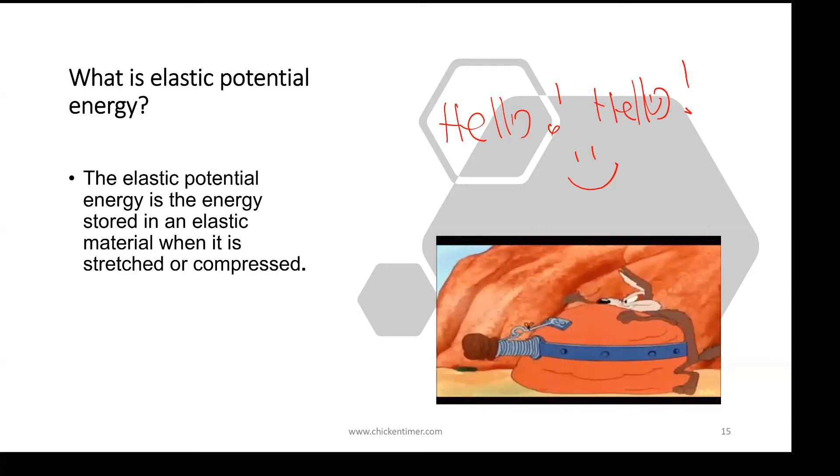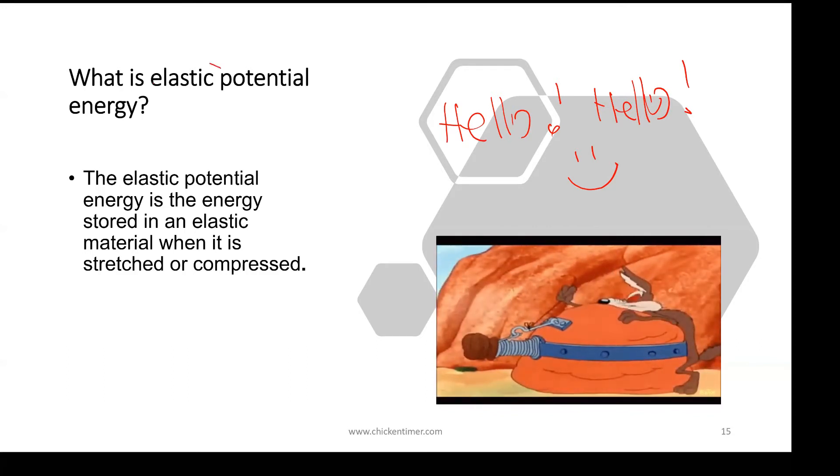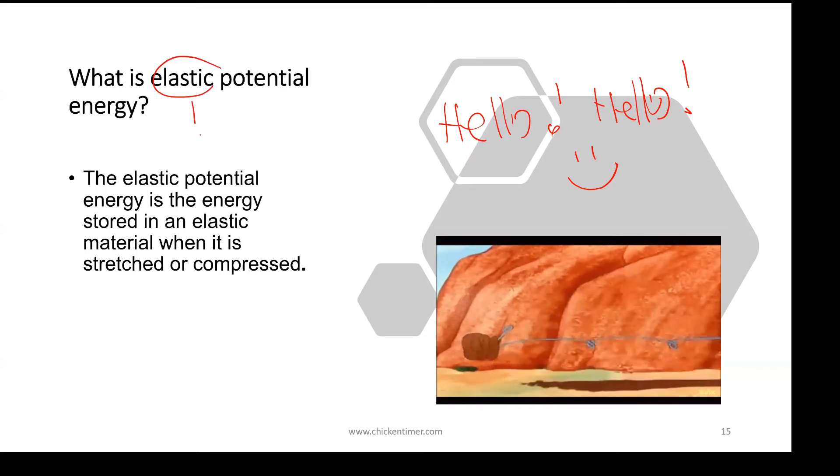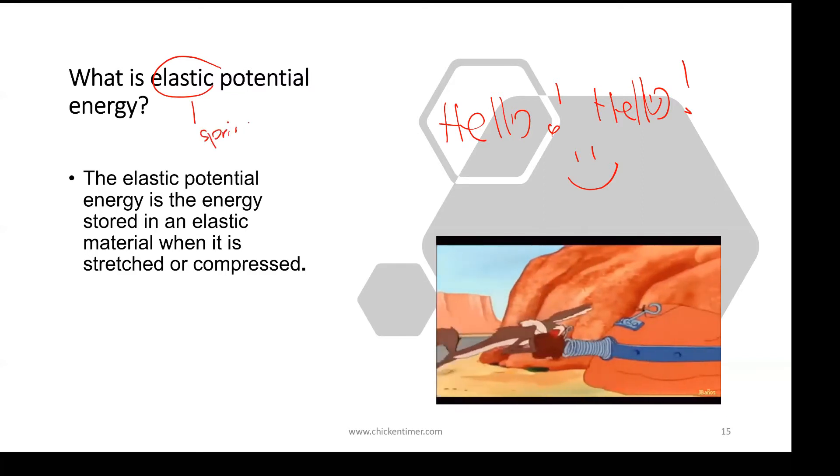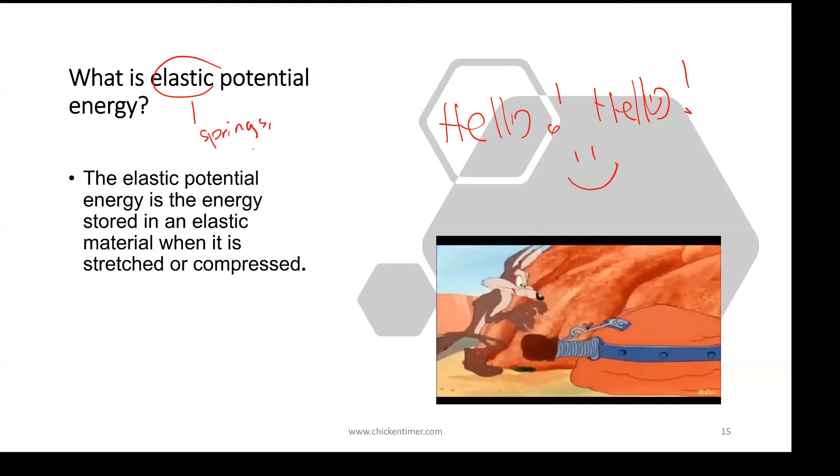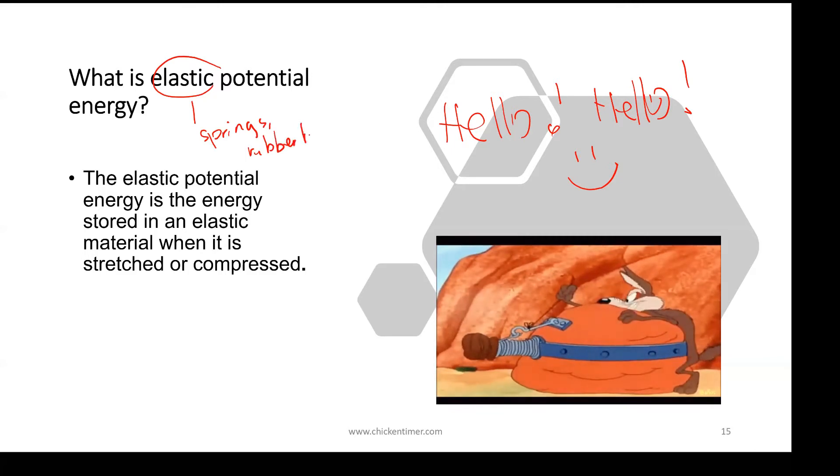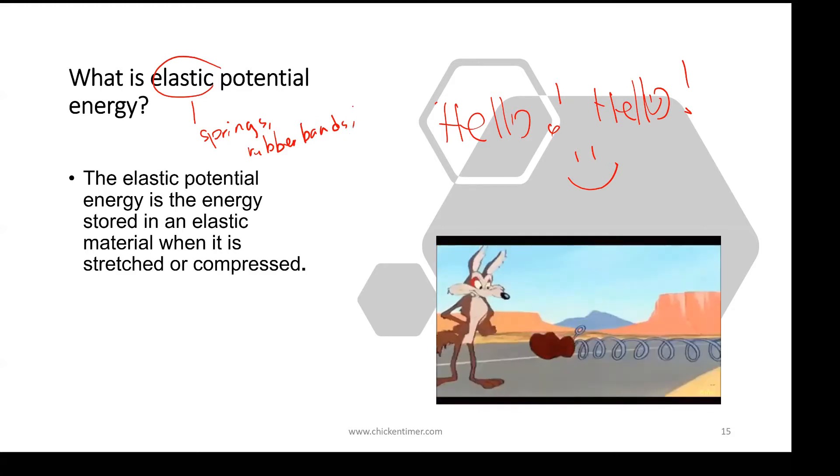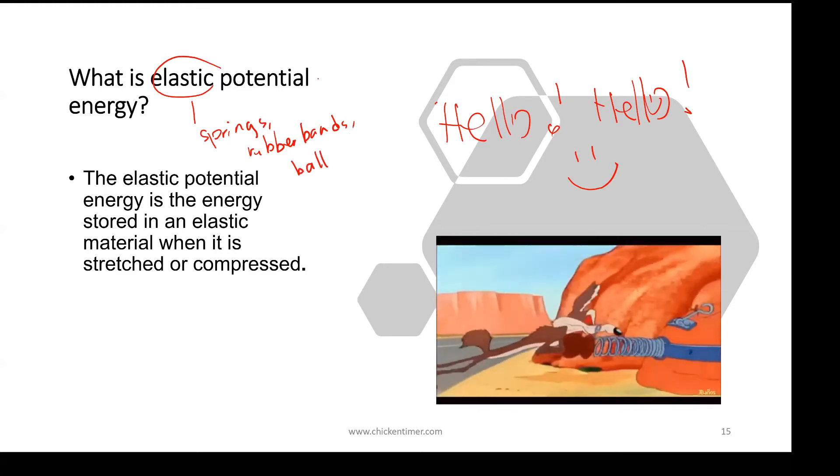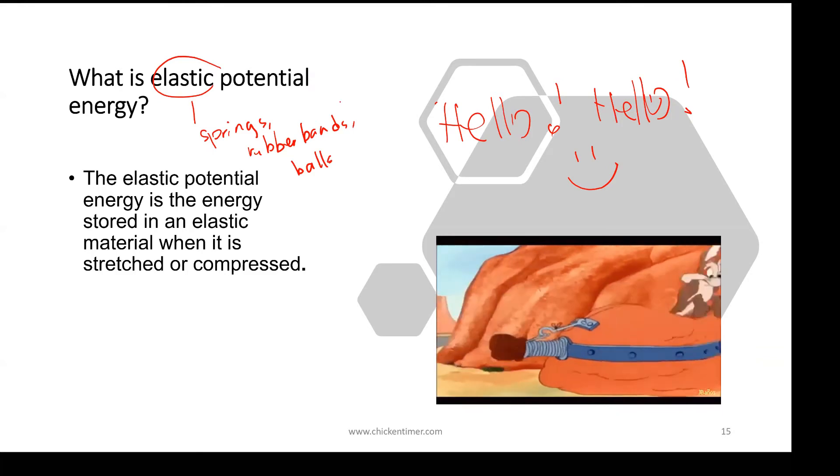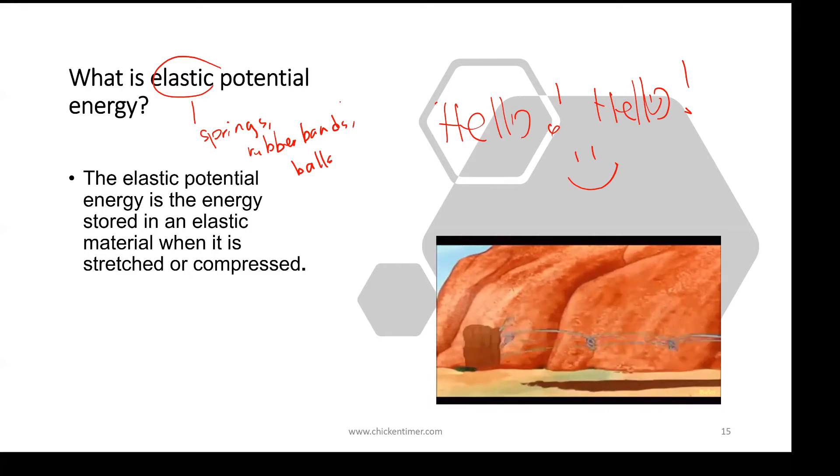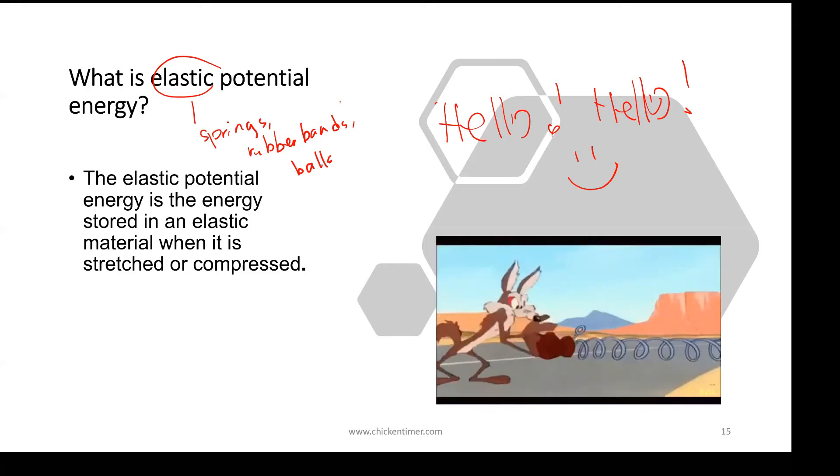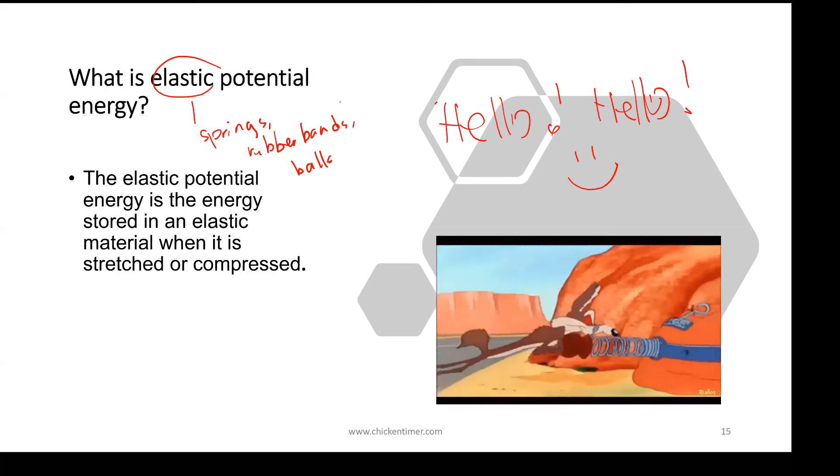So what happens is certain materials are elastic. You have objects like springs, rubber bands, certain balls like rubber balls or basketballs. They are elastic, meaning that if you apply a force onto it, it will either stretch or become compressed or they will change shape.